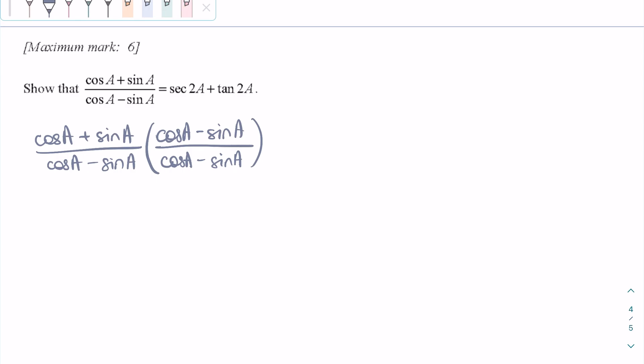So in this case, we would multiply both the top and bottom by cos a plus sin a. When we multiply it all out, we get cos squared a plus 2 cos a sin a plus sin squared a over cos squared a minus sin squared a.